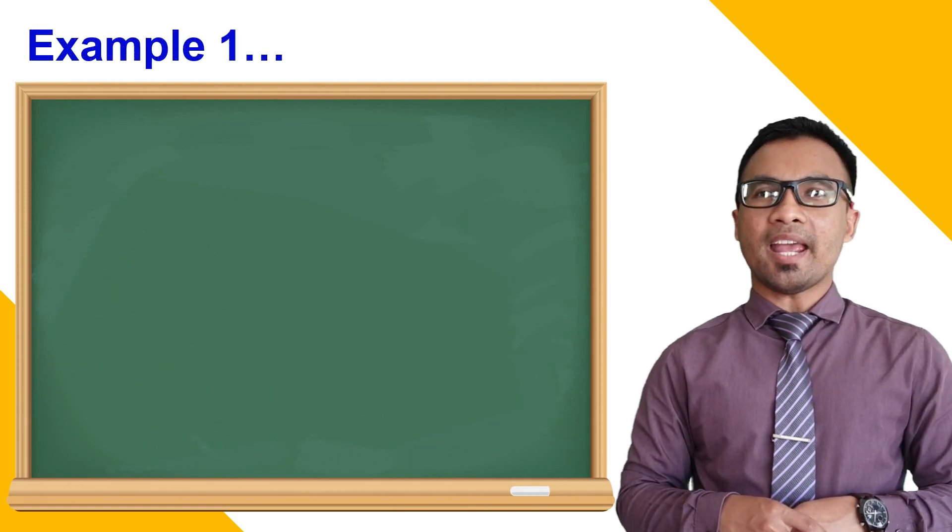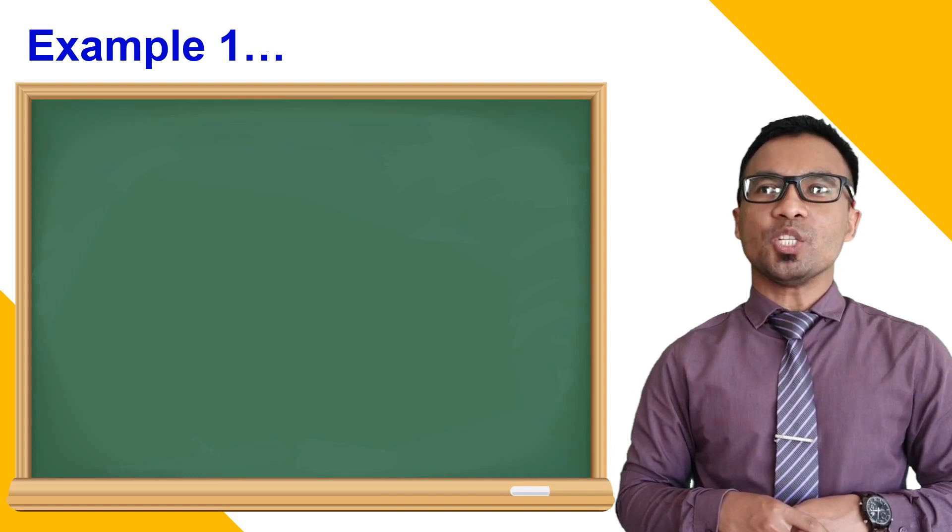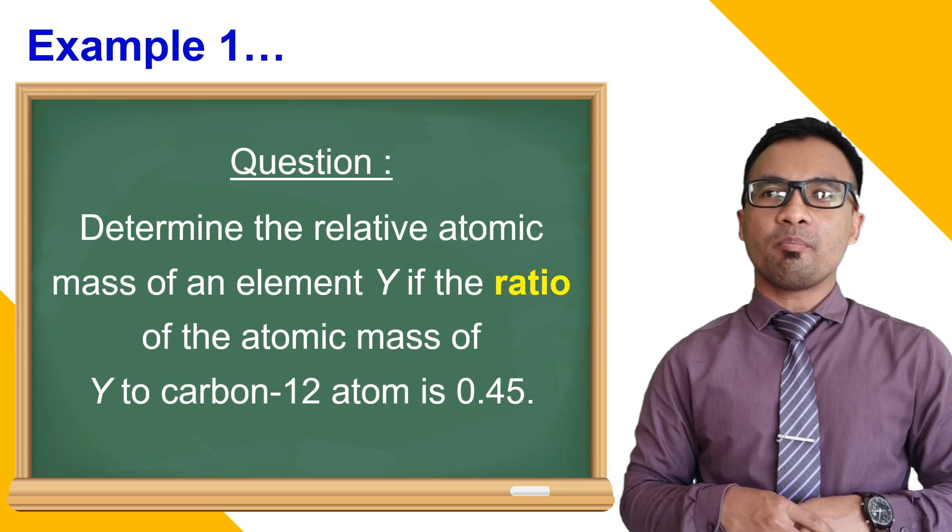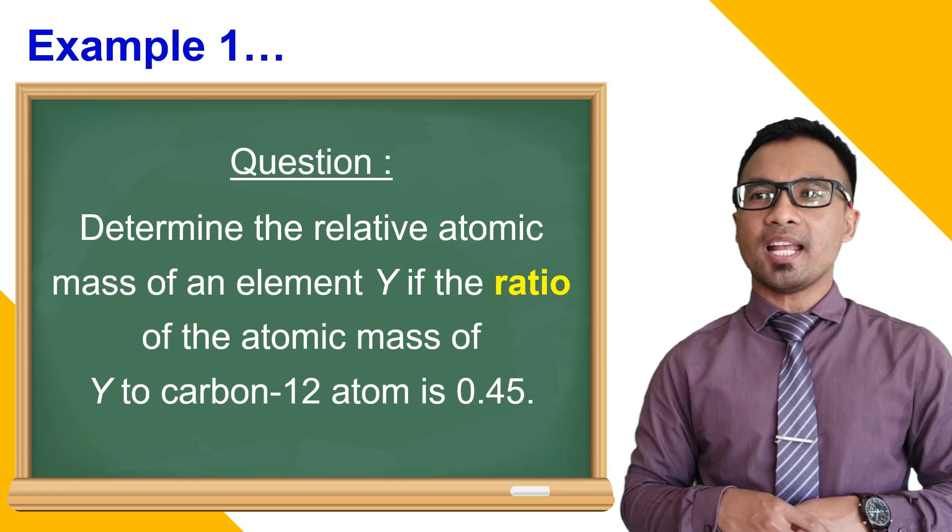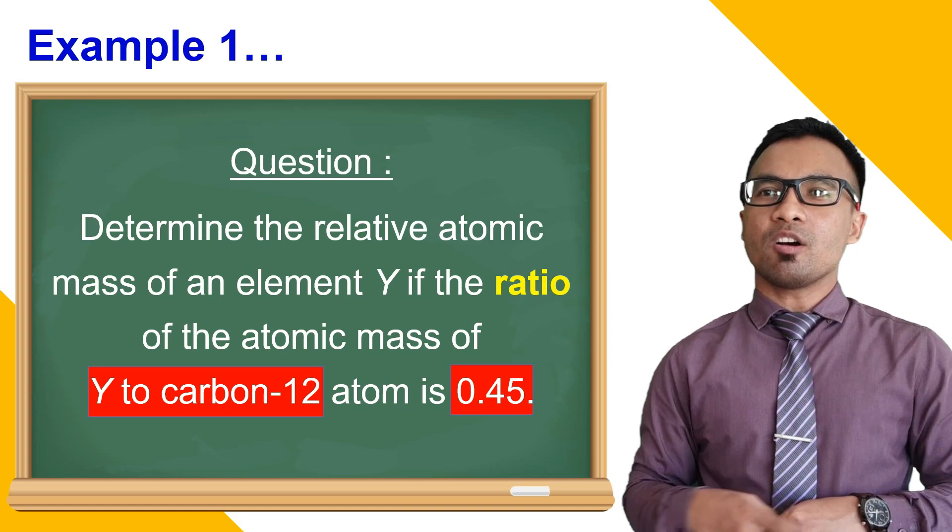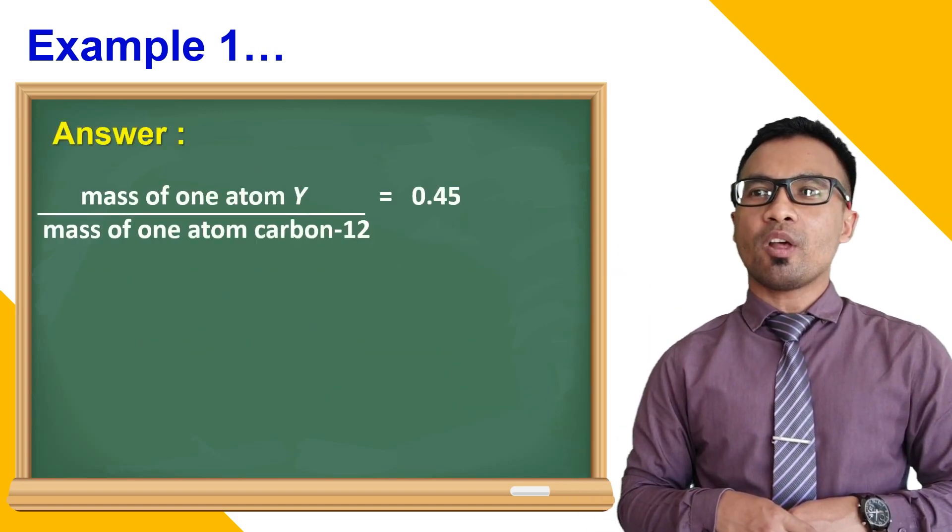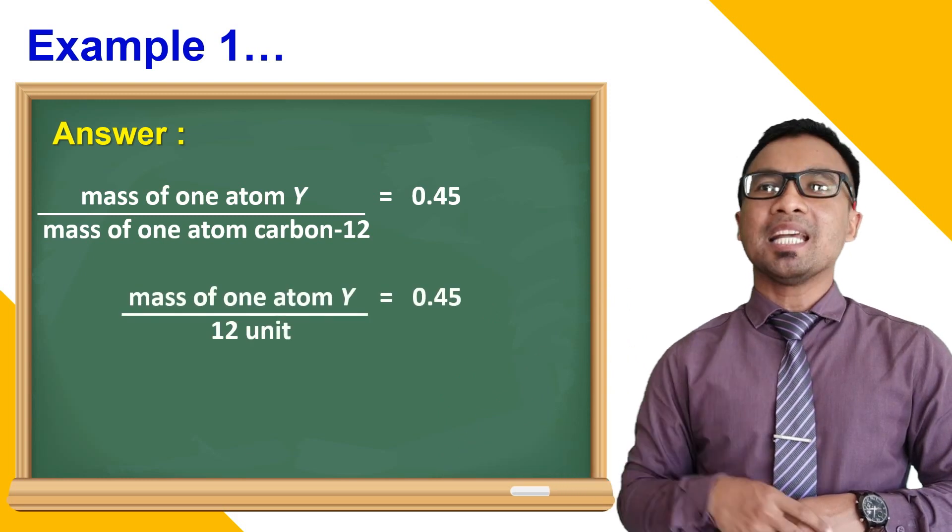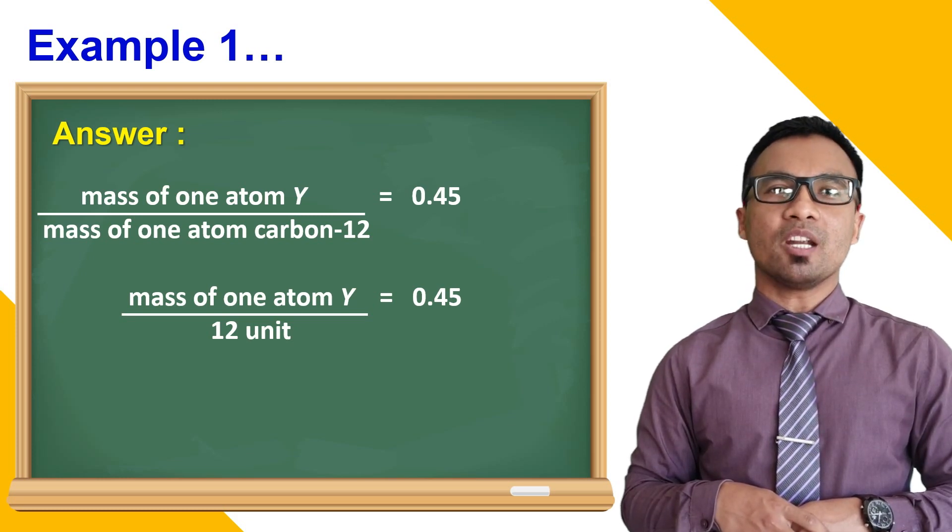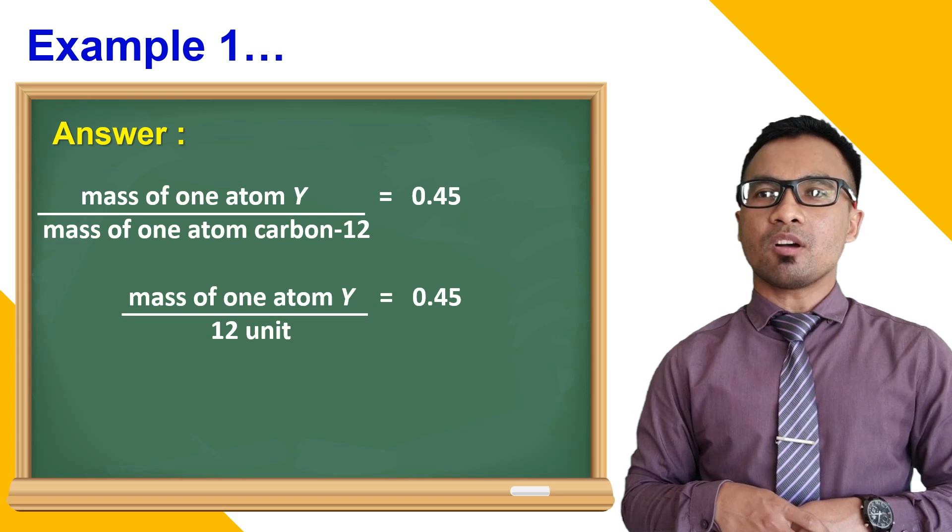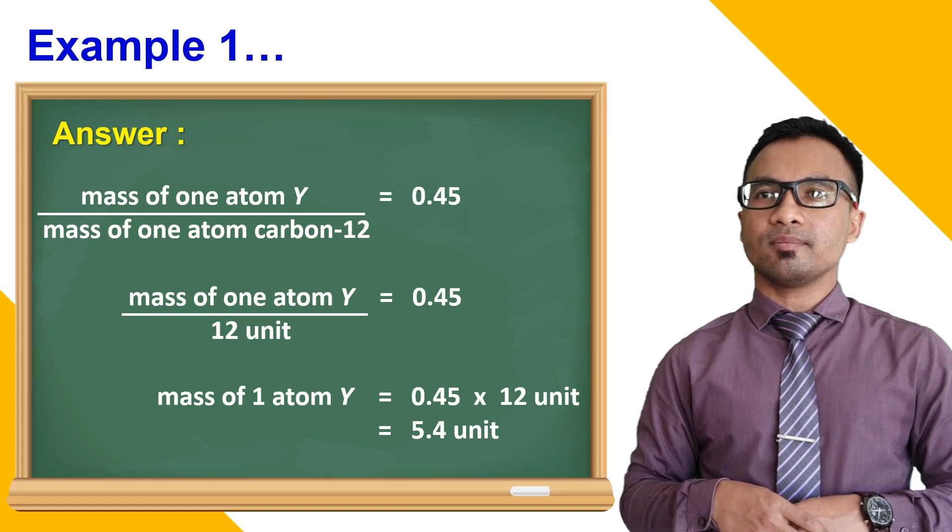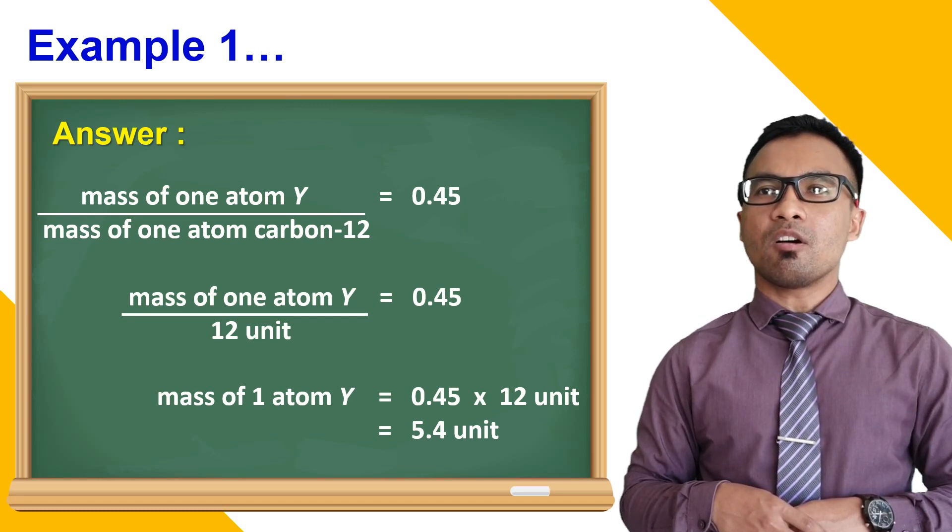Let's look at example number one. In this example, you need to determine the relative atomic mass of Y when the ratio of mass of one atom Y to mass of one atom of carbon-12 is 0.45. This means that mass of one atom of Y to 12 unit is 0.45. This is because mass of one atom of carbon-12 is 12 unit. And by rearranging the equation, you will have the mass of one atom of Y to be 5.4 unit.